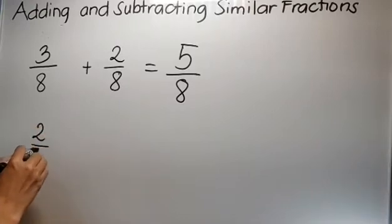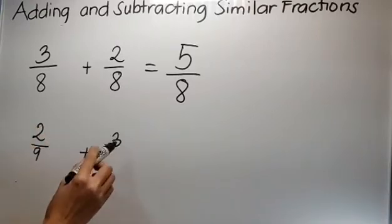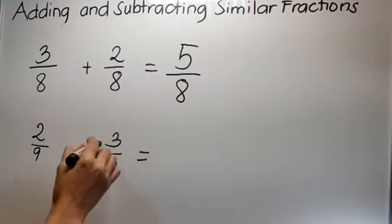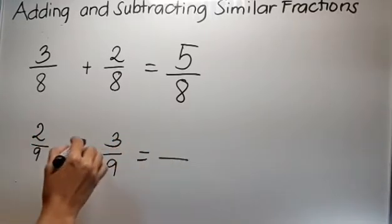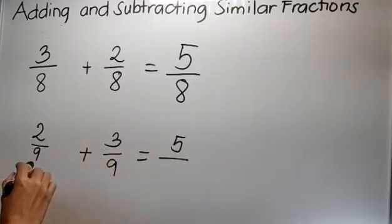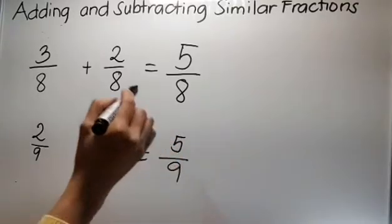And one more time. So, again 2/9 plus 3/9, another similar fractions. So, concentrate ka lang ulit dun sa taas: 2 plus 3 is 5, and then copy the denominator.